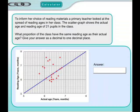To inform her choice of reading materials, a primary school teacher looked at the spread of reading ages in her class. This scatter graph shows the actual age and the reading age of 21 pupils in the class. What proportion of the class have the same reading age as their actual age? This question is even easier than the last one because they've actually drawn the diagonal line on for us. So all we have to do is count how many points lie on that line.